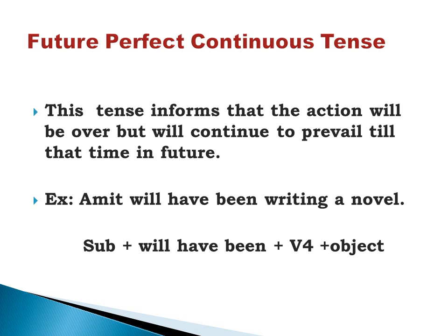Future perfect continuous tense informs us that the action will be over but will continue to prevail till that time in the future. Example: Amit will have been writing a novel — he will have begun the action but will have continued with the same action for a longer period. Formula: subject + will have been + V4 (ing form of the verb) + object.